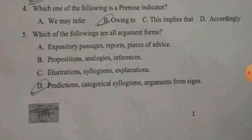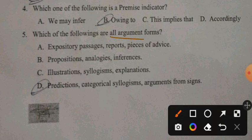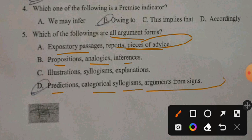Question 5: Which of the following are all argument forms? A. Expository passages, reports, pieces of advice. B. Propositions, analogies, inferences.